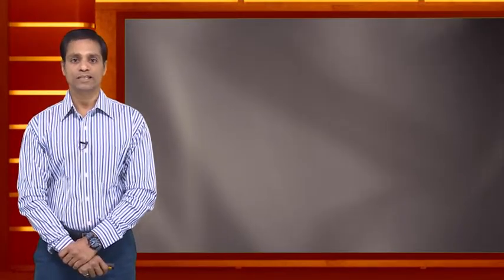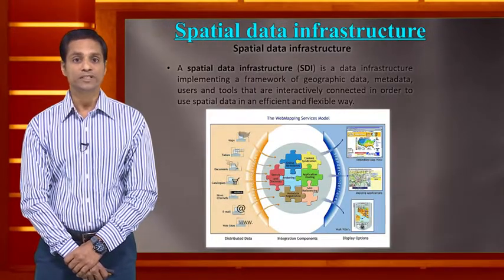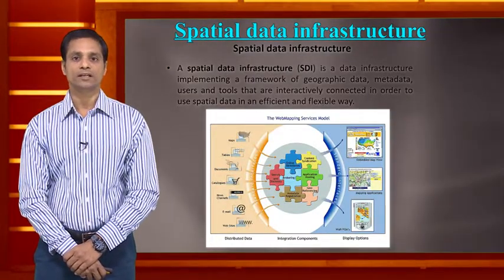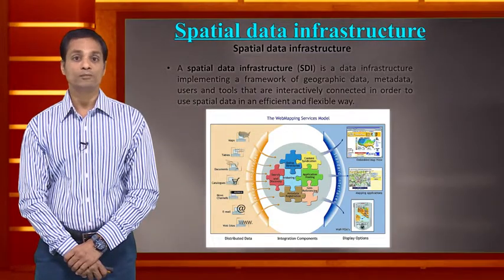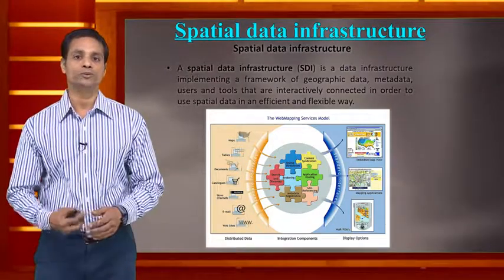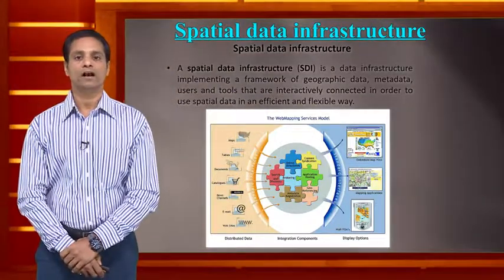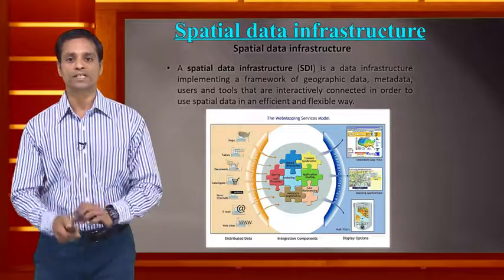Using modeling, the impact of specific disasters such as flooding or drought can be assessed, and runoff distances can be calculated to determine the total affected area. This is called Spatial Data Infrastructure — a framework of geographic data, metadata, users, and tools interconnected to use spatial information effectively and flexibly.